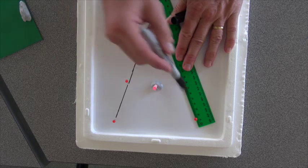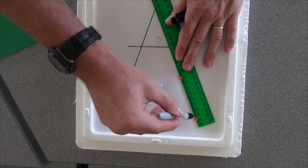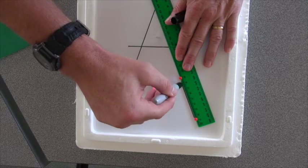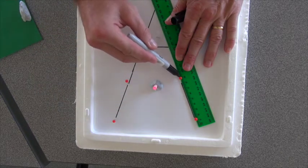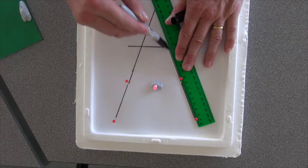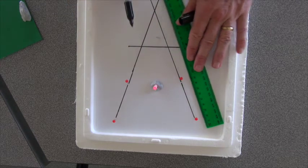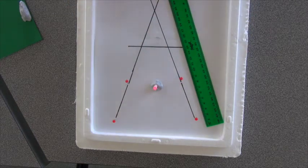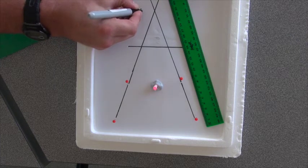So I'll take my second line, just draw that in there. Excellent, and you can see now that it crosses. Now where it crosses, that is where my image is going to be.